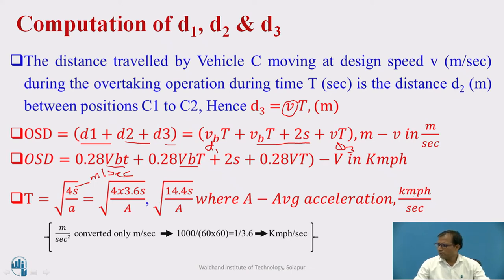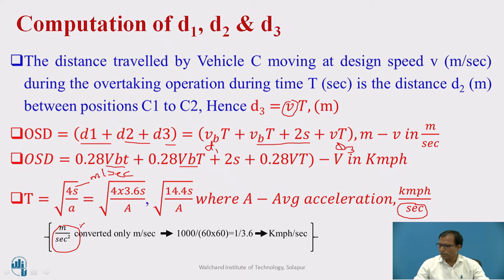Students often get confused about whether A is meters per second squared or KMPH per second. The conversion only changed one 'meters per second' into KMPH, leaving the second 'per second' unchanged. So acceleration A here has units of KMPH per second — not meters per second squared — when using the KMPH form of the equation.